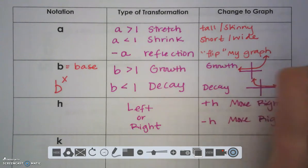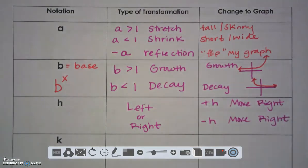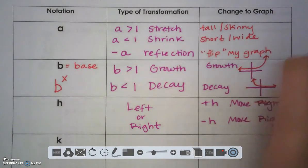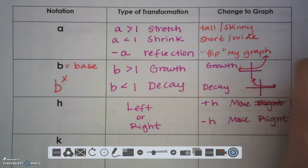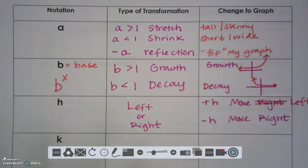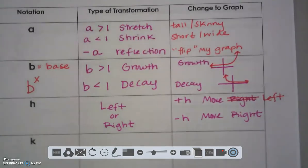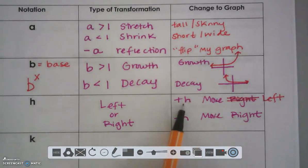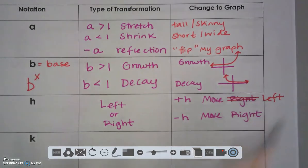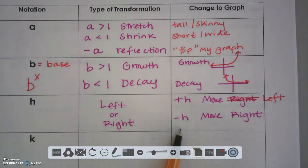A negative H has a transformation of moving right. Now, Ms. Walsh has made an error in her notes, and I apologize. I need to do the opposite. So this should be left. Okay, we're always doing the opposite. Positive H, you're doing the opposite, move left. Negative H, do the opposite, move right.